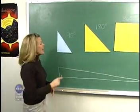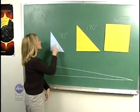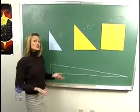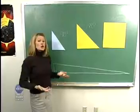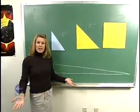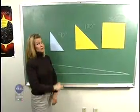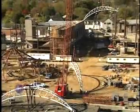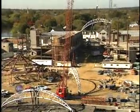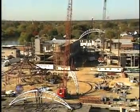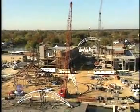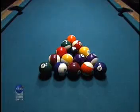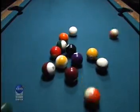In order to calculate the remaining angles of a right triangle, you have to use math and geometry. Geometry is used in everything we do, from constructing roads and buildings to playing football or pool.